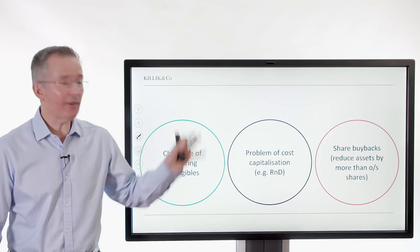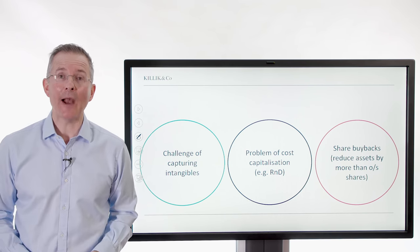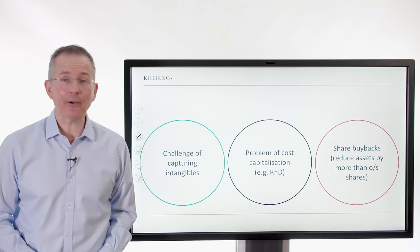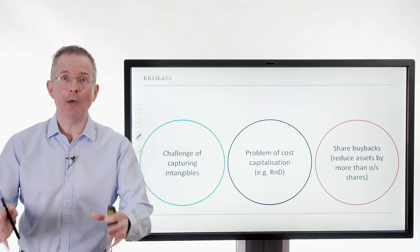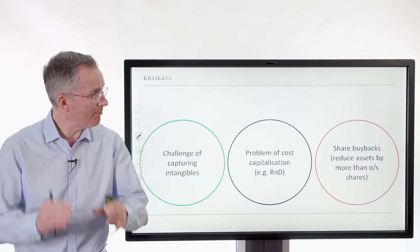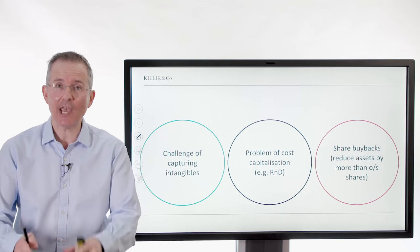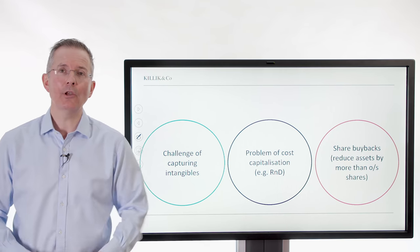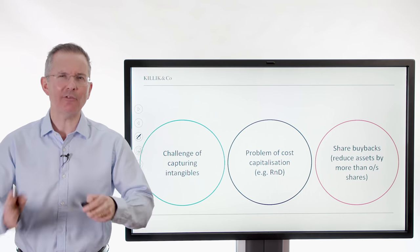And share buybacks. They can be a problem. They're popular at the moment. One of the problems is that they can, this is a technical point, reduce assets and the book more than the number of outstanding shares. And that again can distort your view of value. Is the firm super expensive using this one lens?